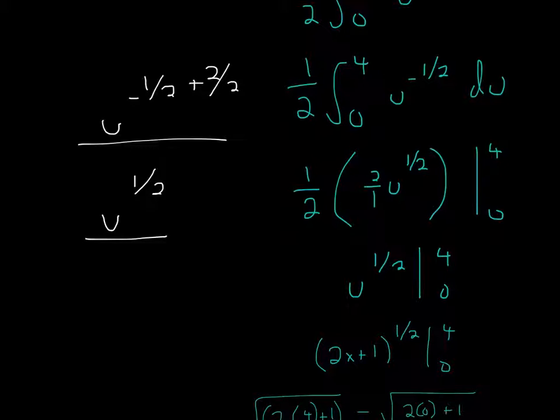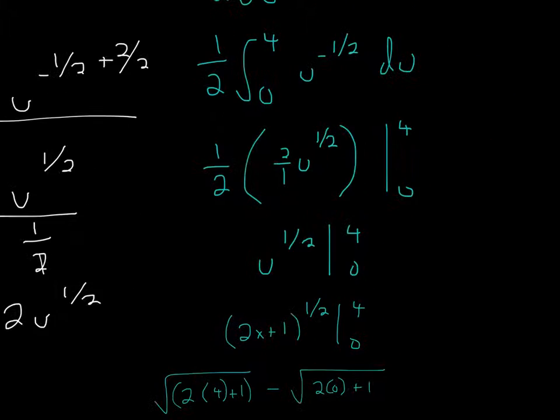because 2 over 2 minus 1/2 equals 1/2. Then I divide by this 1/2. When you divide by a fraction, it's the same as multiplying by its reciprocal. So you get 2u to the 1/2. That's 2 times u to the 1/2 times 1/2. This 2 times 1/2 cancels, and now you'll evaluate it at the bounds.